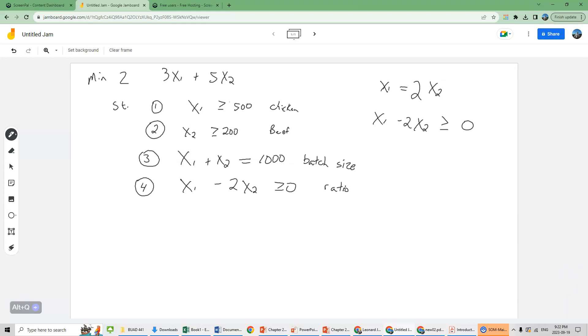The next video will go over one final example for Chapter 2, which involves a maximization problem, but with three or four different constraints.